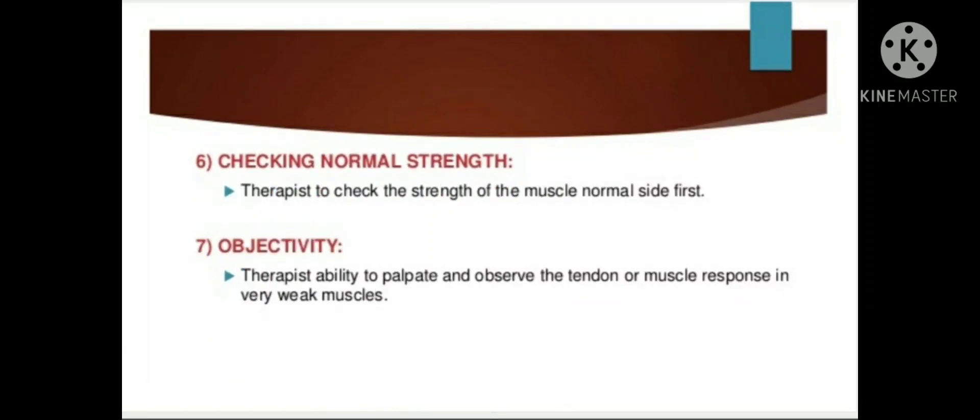Checking normal strength: the therapist performs MMT on both sides — first on the normal side, then on the abnormal side, to compare. Objectivity: the therapist must have the ability to palpate and observe the tendon or muscle response, especially in a very weak muscle.